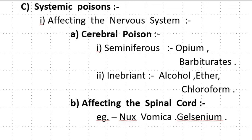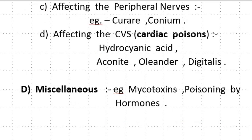Third is Systemic Poison, affecting the nervous system. First, some poisons affect the cerebral system and these are called Cerebral Poisons. Cerebral Poisons are again divided into Somniferous — Opium and Barbiturates — Inebriant: Alcohol, Ether and Chloroform. Systemic Poisons may also affect the spinal cord, e.g. Nux Vomica and Gelsemium. Poisons may affect the peripheral nervous system, e.g. Curare and Conium.